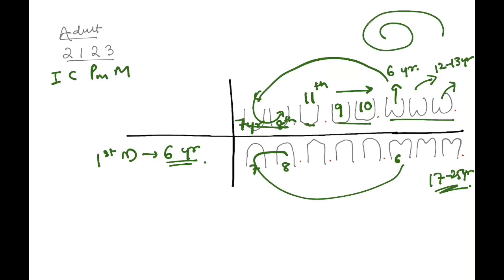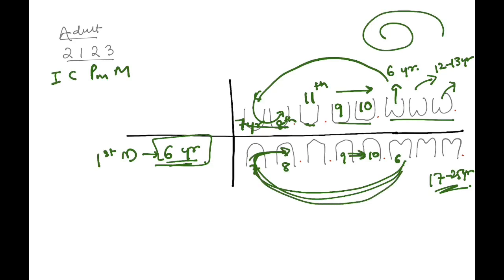To recap the adult sequence: we started from the first molar at six years, then in a spiral — central incisors at seven years, lateral incisors at eight years, then the two premolars at nine and ten years going laterally. Before completing the spiral, the canine erupts at eleven years. Then we move on to the remaining molars: second molar at twelve to thirteen years, and third molar at seventeen to twenty-five years.